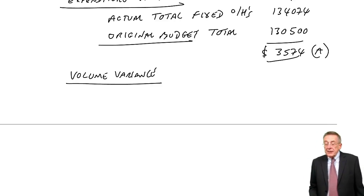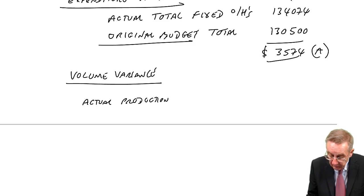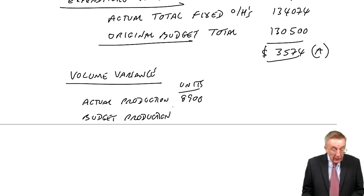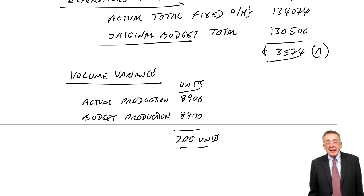The volume variance, we compare our actual production, which in units is 8,900, with the budget production, which was 8,700 units.